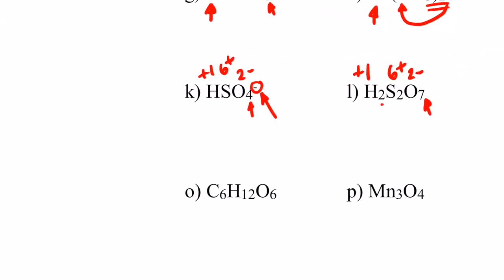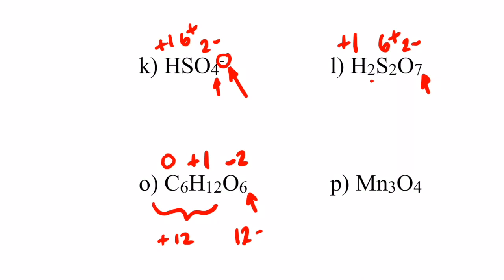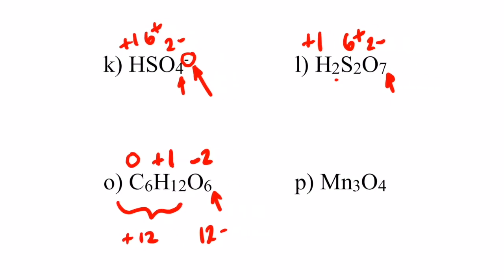For letter o, C6H12O6: oxygen is negative two, and six oxygens give twelve negatives. We need twelve positives from carbon and hydrogen. Hydrogen can only be positive one, and with twelve hydrogens that already gives twelve positives. So carbon needs no additional positive charge — carbon has an oxidation number of zero in this compound.